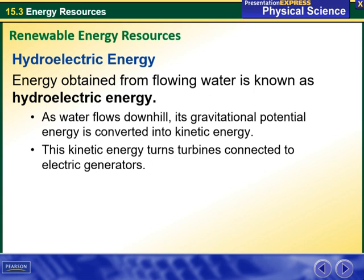Firstly, we're going to talk about hydroelectric energy. Energy that is obtained from flowing water is known as hydroelectric energy. As water flows downhill, its gravitational potential energy is converted into kinetic energy. This kinetic energy turns turbines connected to electric generators.